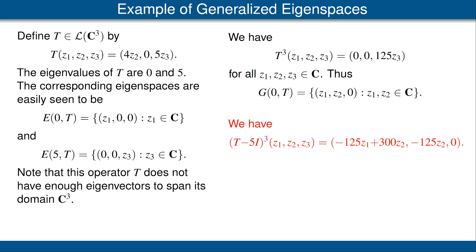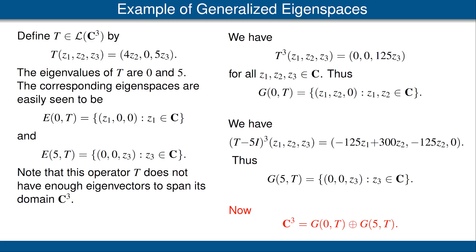Now let's look at the eigenvalue 5 for this operator and find its generalized eigenspace. That means we need to look at t minus 5i cubed, and here's the formula for that — please stop the video and verify that this formula is correct. The generalized eigenspace corresponding to the eigenvalue 5 is the set of vectors such that the result is 0, which means that both z₁ and z₂ have to be 0. Thus the generalized eigenspace is the set of vectors of the form (0, 0, z₃). Notice that C³ is the direct sum of these two generalized eigenspaces — the first has dimension 2, the second has dimension 1. This always happens: we get a nice decomposition of our vector space into generalized eigenspaces, which will be proved in a later video.